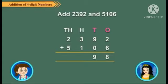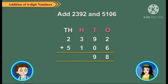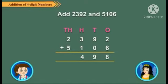Add the hundreds. 3 plus 1 is equal to 4. Finally, add the thousands. 2 plus 5 is equal to 7.